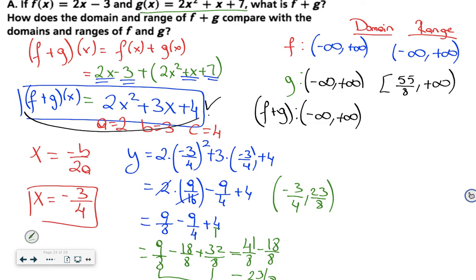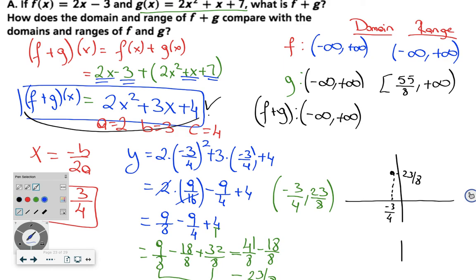Since the vertex is at (negative 3/4, 23/8) and a is positive, the parabola opens upward. The range starts from 23 over 8, which is included, and goes to positive infinity. So the range of (f + g)(x) is [23/8, positive infinity). This is your answer.